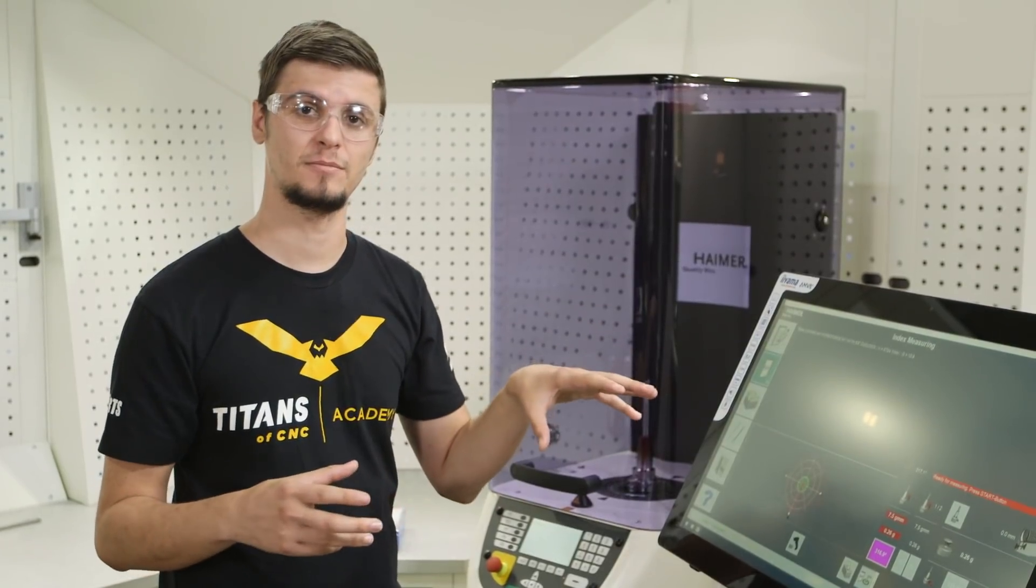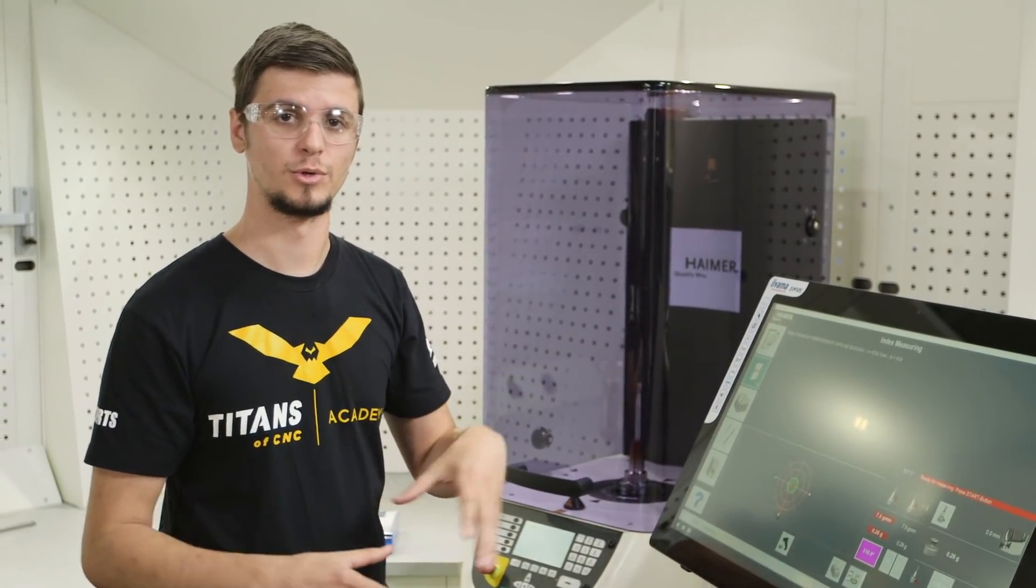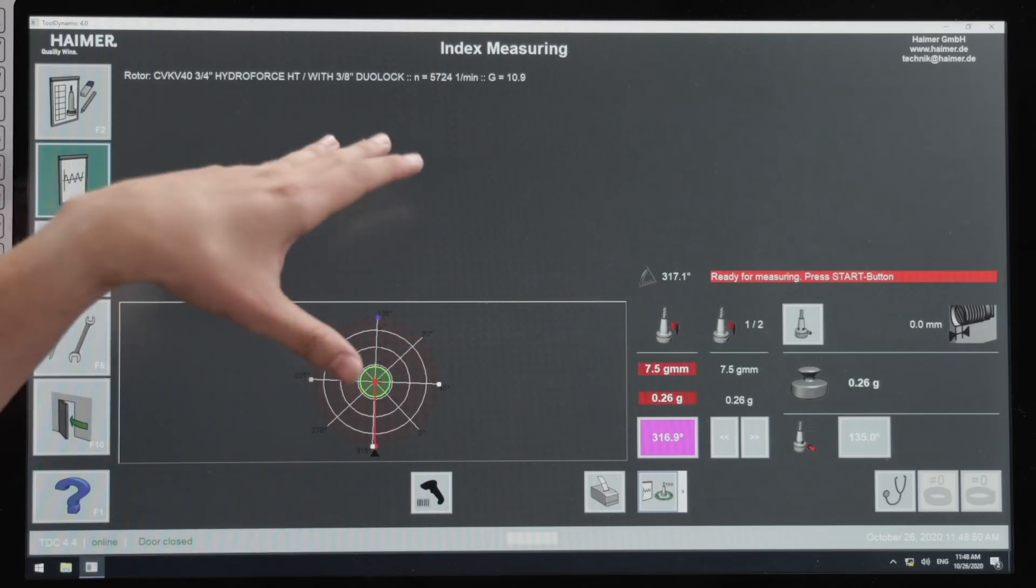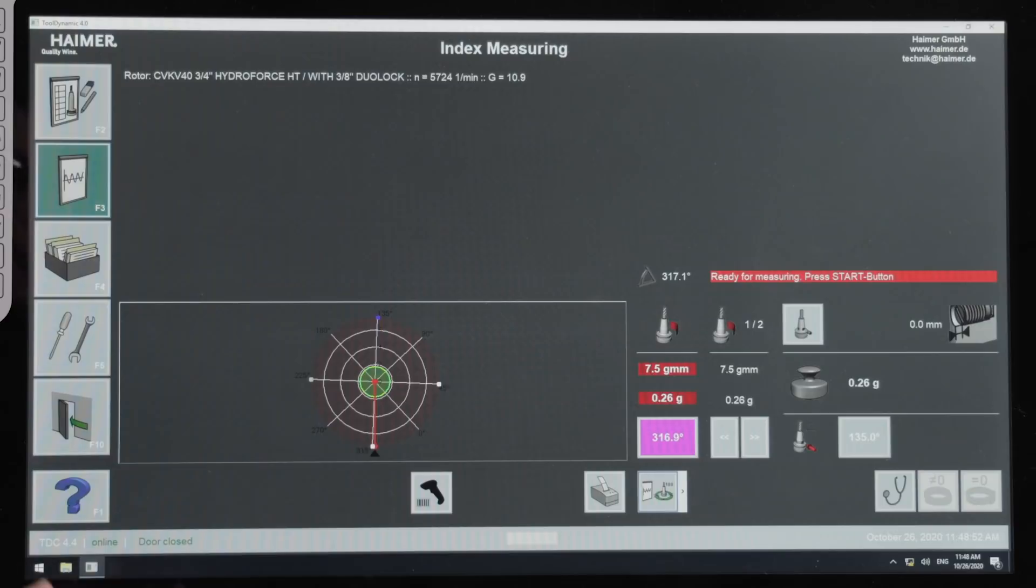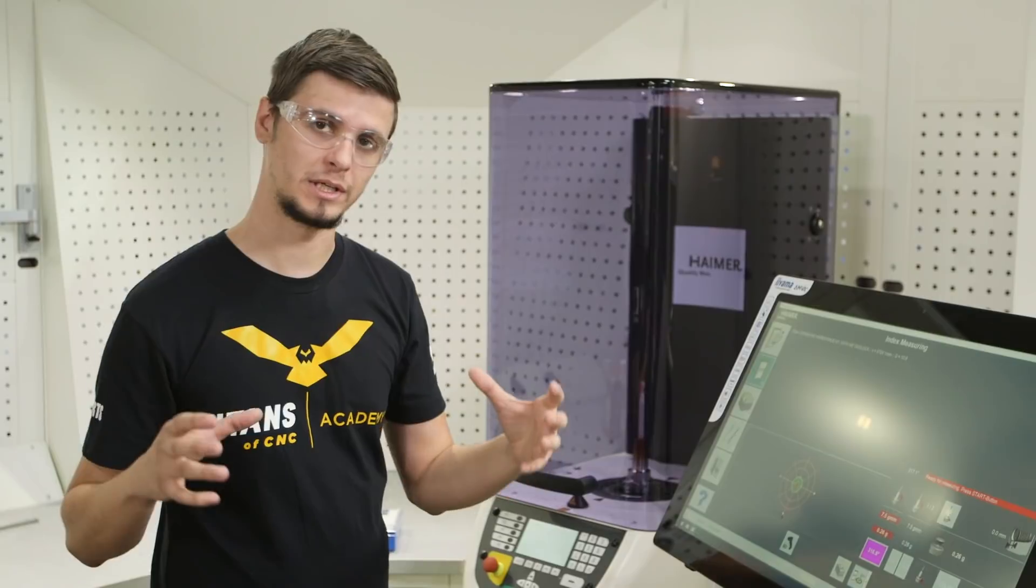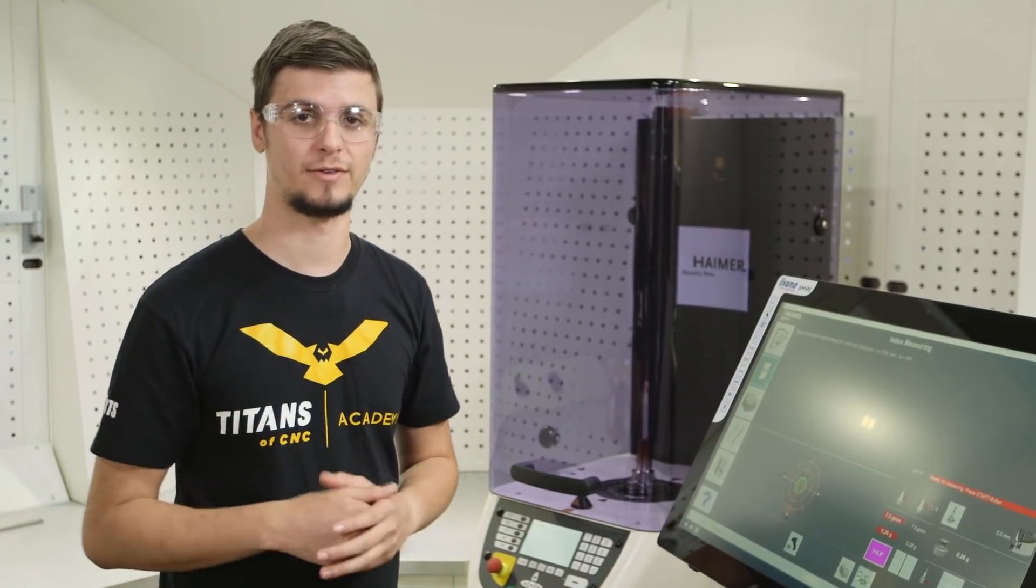We have this set up to test for a 2.5g, which is a universal g rating. Right now it's reading at a 10g, which only allows us to go 5,700 rpm. So we're going to add some weight so that we can get it back up to the 2.5g standard.